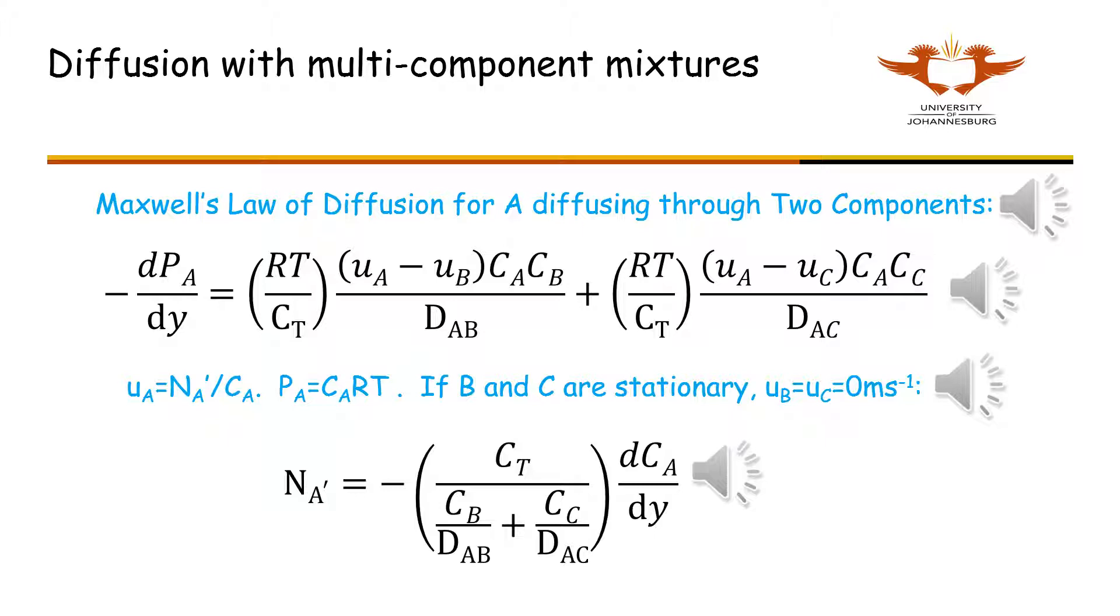The expression in the round brackets represents the effective diffusivity. C B and C C can both be written in terms of C A and C T for a given stationary gas mixture. You can then integrate the expression to solve for the molar flux of A.